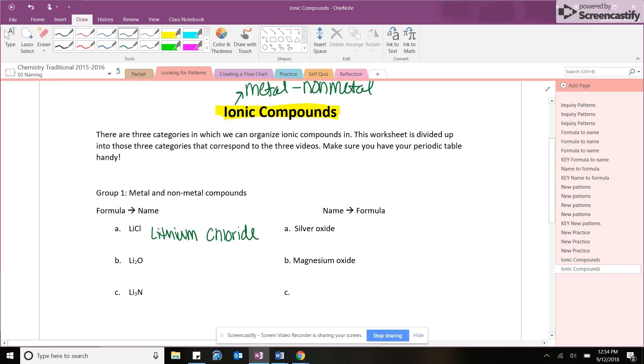And the second element, very similar to molecular compounds, you're going to write down what the element's name is, but instead you're going to switch up the ending to an I-D-E. So chlorine now becomes chloride. Lithium chloride. And you're done.